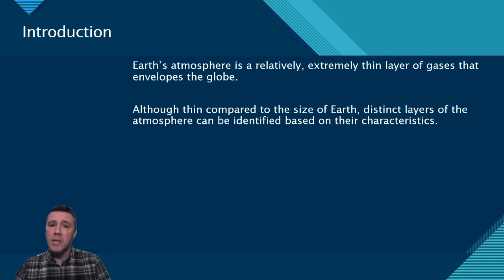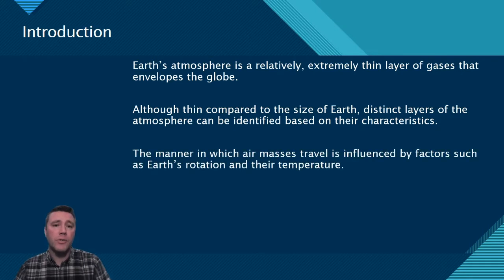Although thin, distinct layers of the atmosphere can be identified based on their characteristics. Factors such as Earth's rotation and the temperature of air masses influence atmospheric circulation patterns.